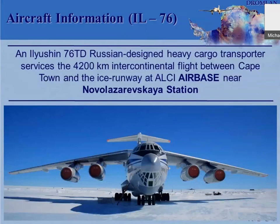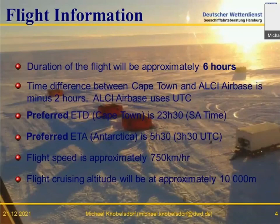The airplane is an Ilyushin from Russia. It has an ice runway at the station, shortened to Novo — the Novo station. The duration of the flight with that aircraft is about six hours. It is preferred to leave Cape Town in the evening and arrive in Antarctica in the early morning hours. Everything is set up in UTC. The flight speed is about 750 kilometers per hour at a flight level of 110, meaning 10,000 meters.